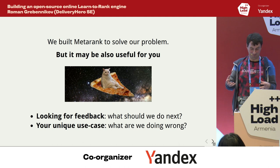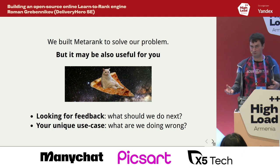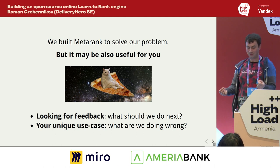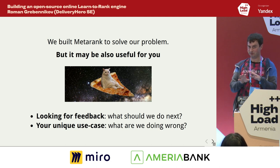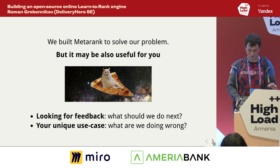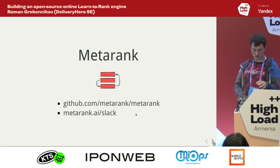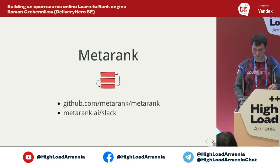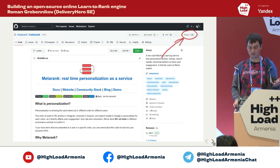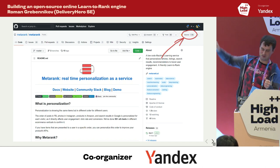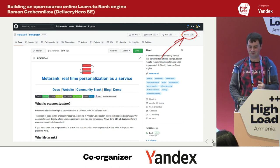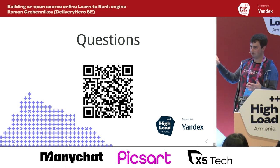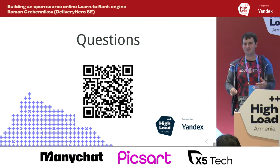We built MetaRank to solve our own pain — if someone asks me to implement a rolling window click-through rate feature one more time I will go crazy because it's the same thing every time. It's a collection of typical things you can just start with, but it can be useful for other people too. We're eager for feedback — we have a public community Slack so you can post there or on GitHub issues. And the most important part — stars on GitHub.